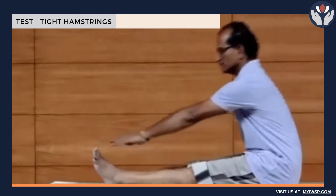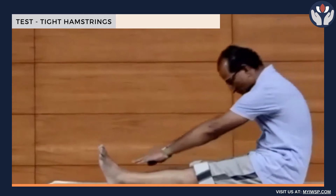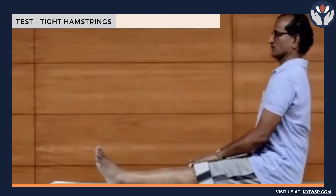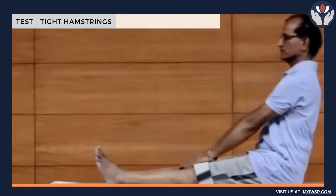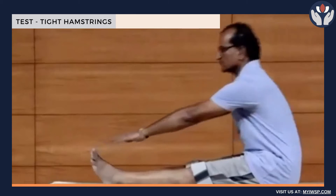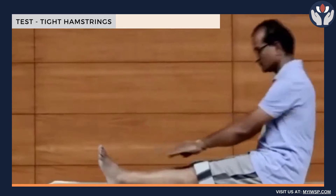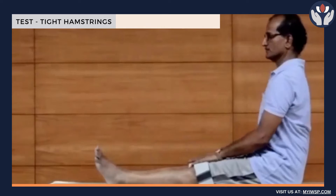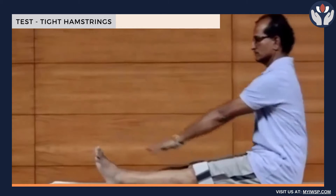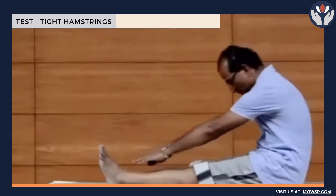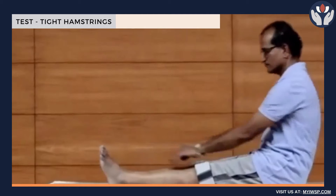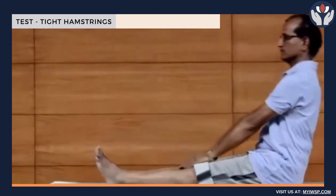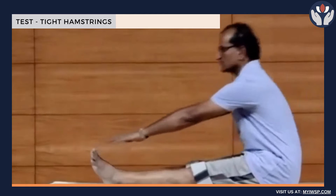Whereas if your hamstrings are quite flexible and lengthy enough, you will be able to bend forward properly. Keeping the leg straight, the torso and chest straight, if you try to bend and you are able to do so, that means your hamstrings are in a flexible position. If they are tight you cannot bend — bending only in the dorsal spine means the hamstrings are tight.